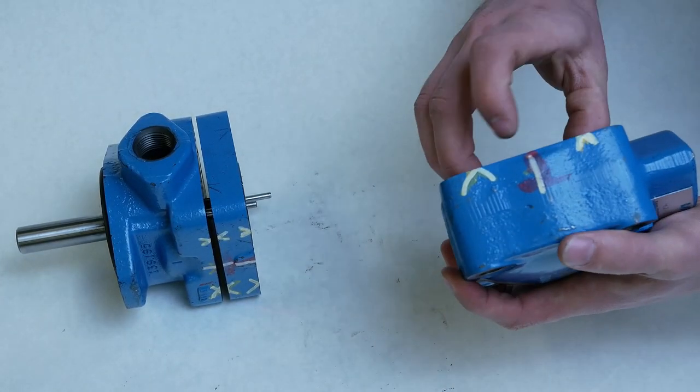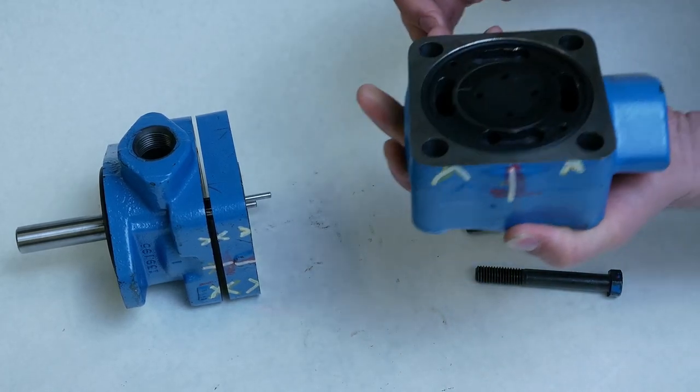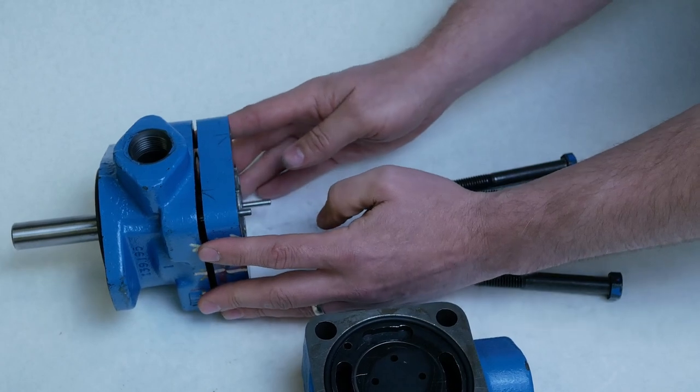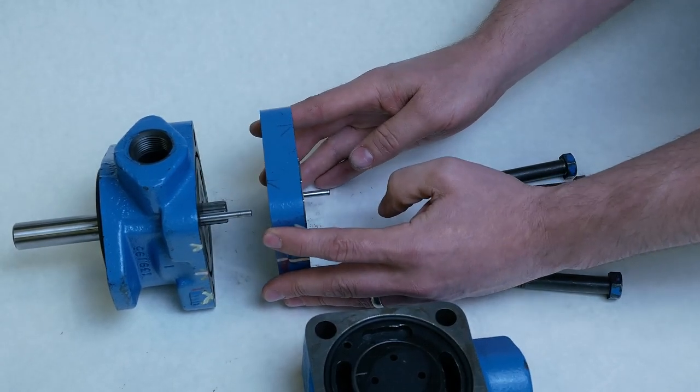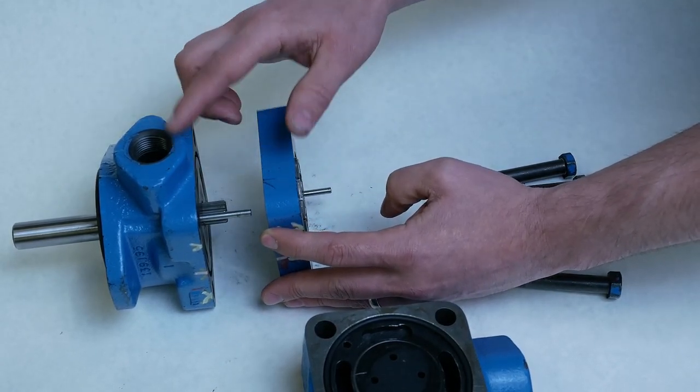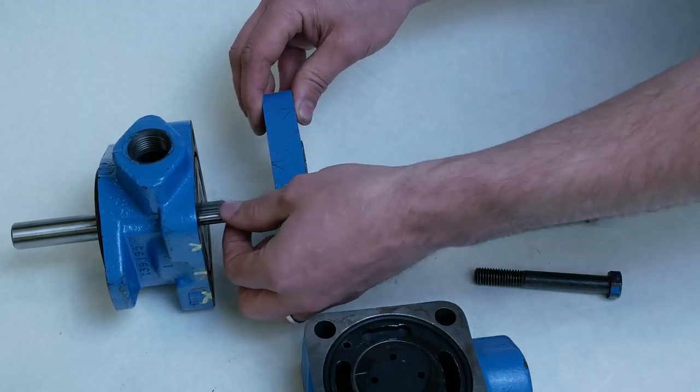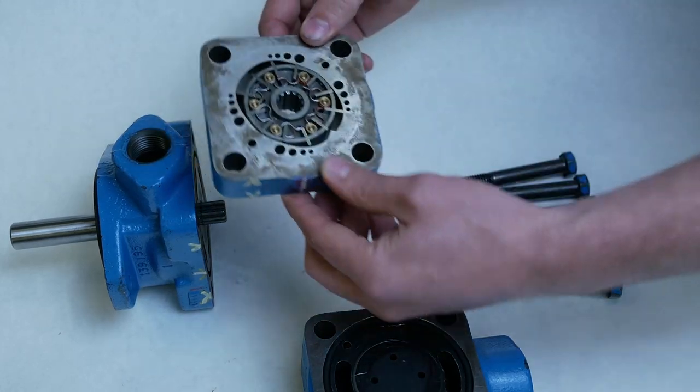We may need to pop that out using a seal pick in a second. If we take the center housing, we can see that it's pinned to the front housing and pinned to the rear housing. We can pull these pins out. They're simply an aligning housing. And this is our motor.